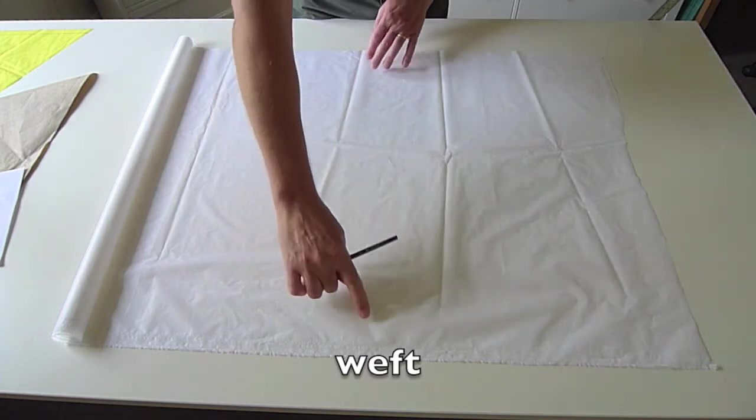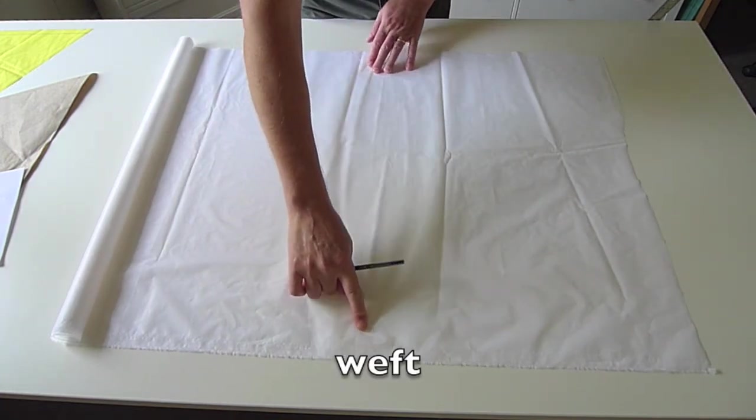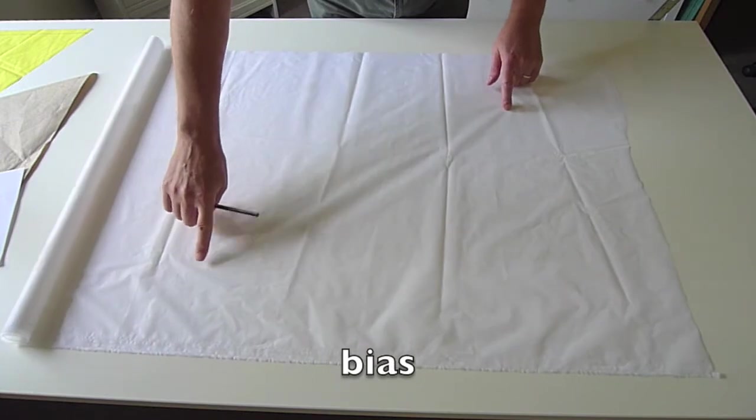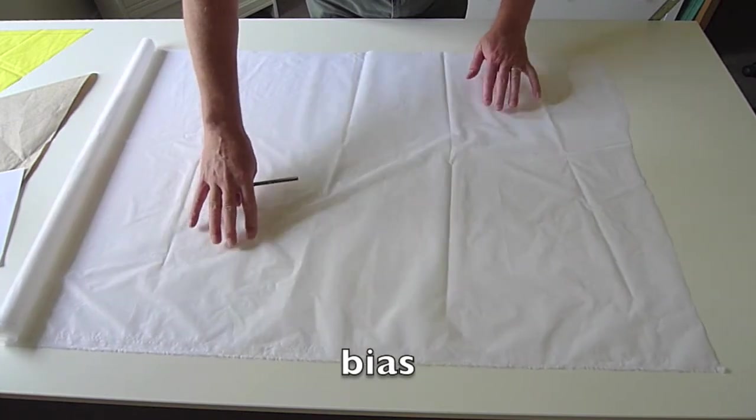Across the roll it's called the weft and that has a little bit more stretch, and diagonal to the fibers is the bias which is very stretchy.